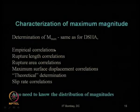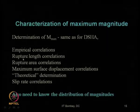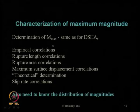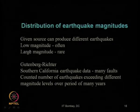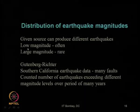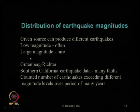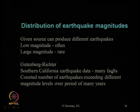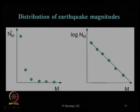For obtaining the maximum magnitude, the same methodology is used as in DSHA: either using empirical correlations based on rupture length, rupture area, maximum surface displacement, or based on theoretical determination using seismic moment criteria or slip rate correlations. At a given source, several magnitudes of earthquake may occur — chances of occurrence of low magnitudes are quite frequent, whereas large magnitude earthquakes are very rare. Using that, Gutenberg and Richter proposed plotting the number of occurrences of earthquake with respect to their magnitude: lower magnitude earthquakes occur more frequently and higher magnitude earthquakes occur less frequently.